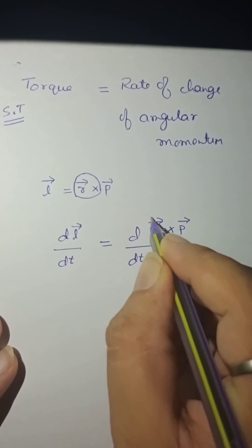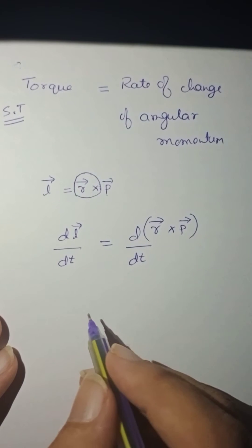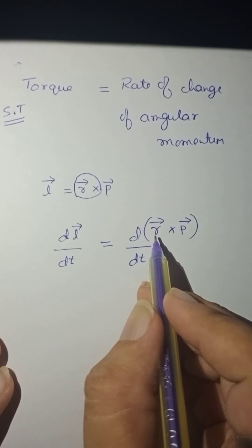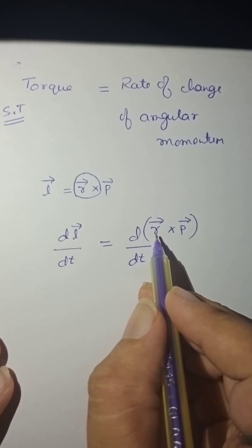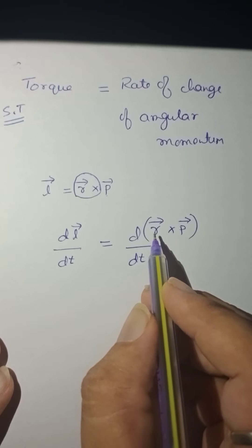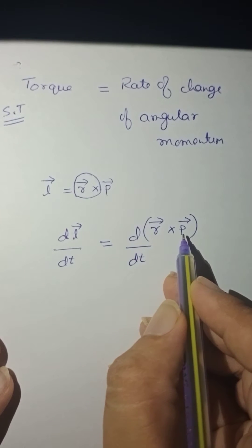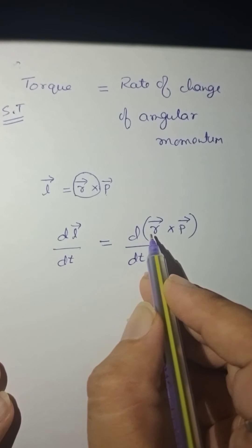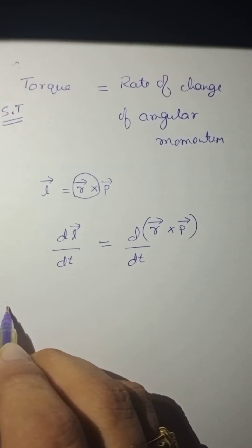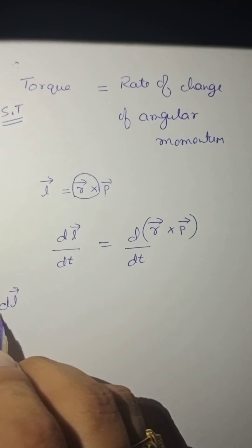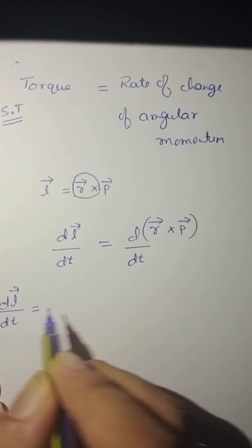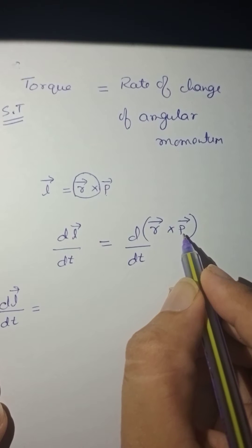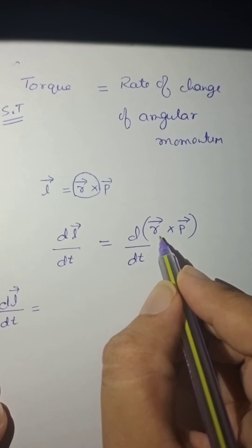Now I know the rule of differentiation — chain rule. According to chain rule, differentiation of functions U into V equals U into differentiation of V plus V into differentiation of U. So DL by DT is equal to first function into differentiation of second function plus second function into differentiation of first function.